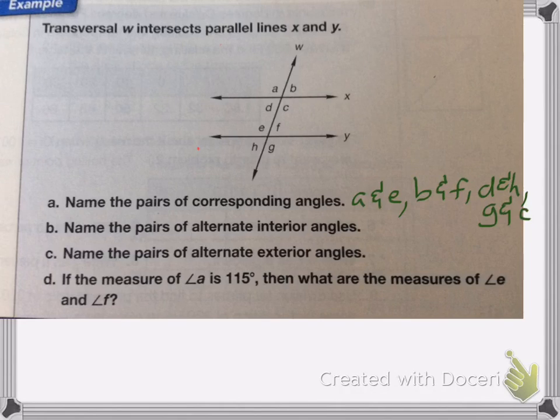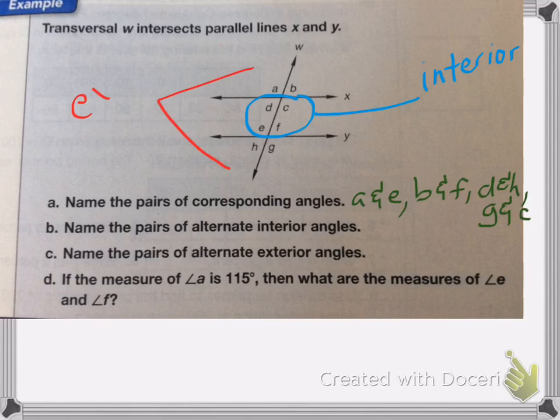On B, it says name the pairs of alternate interior angles. So first, interior angles are the angles on the inside of my drawing, of my transversal. These are interior angles. So if these ones are interior, that means that these ones are exterior angles.